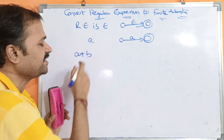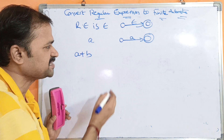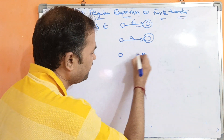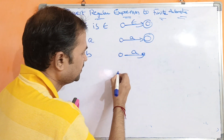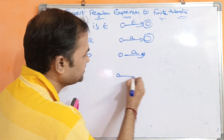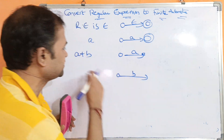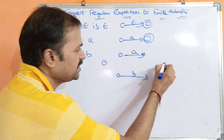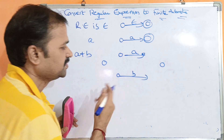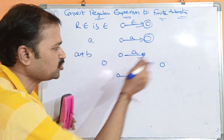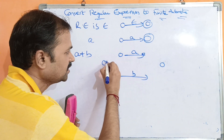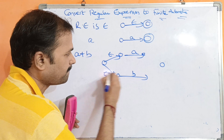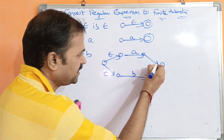Next, let the regular expression be A plus B. For representing A we require two states, and for representing B we require two more states. Plus here is called union. For the union operation we require two additional states, and we need to apply epsilon transitions between them.